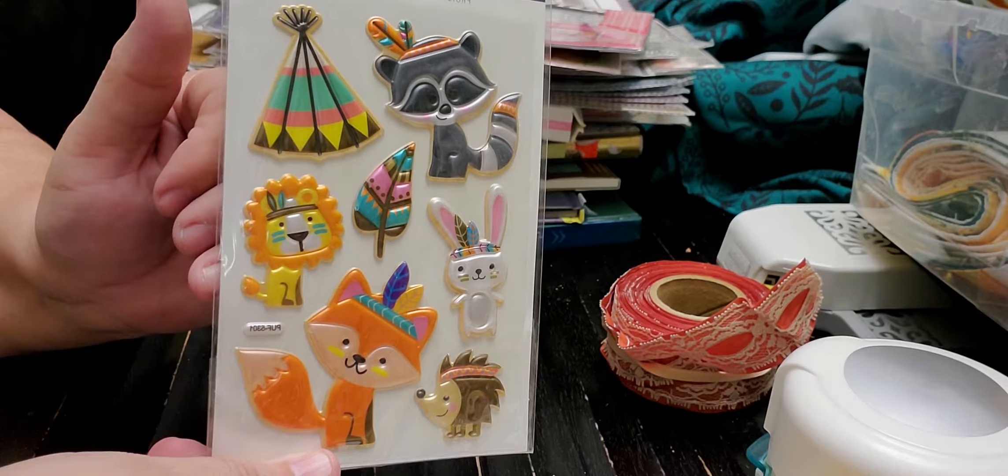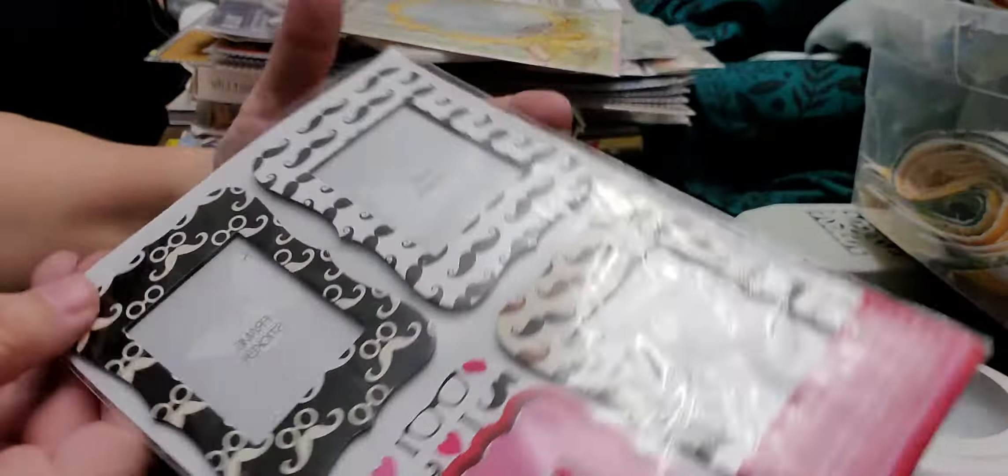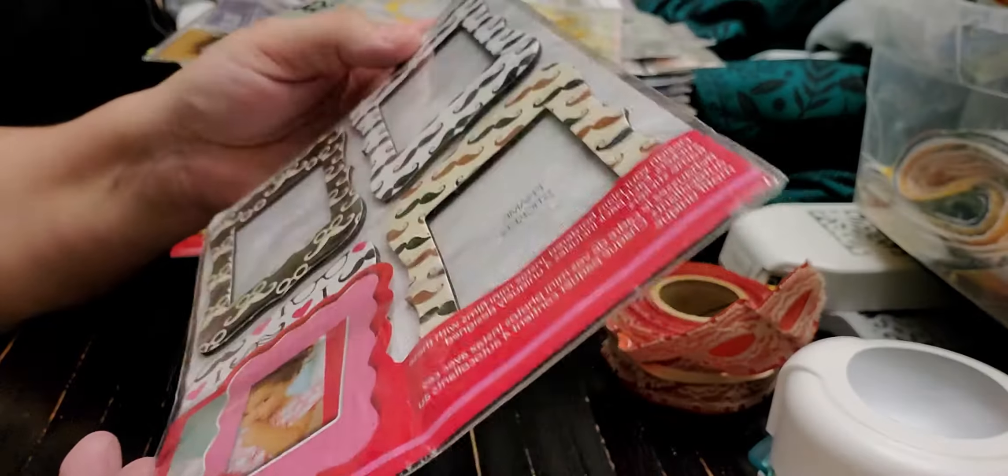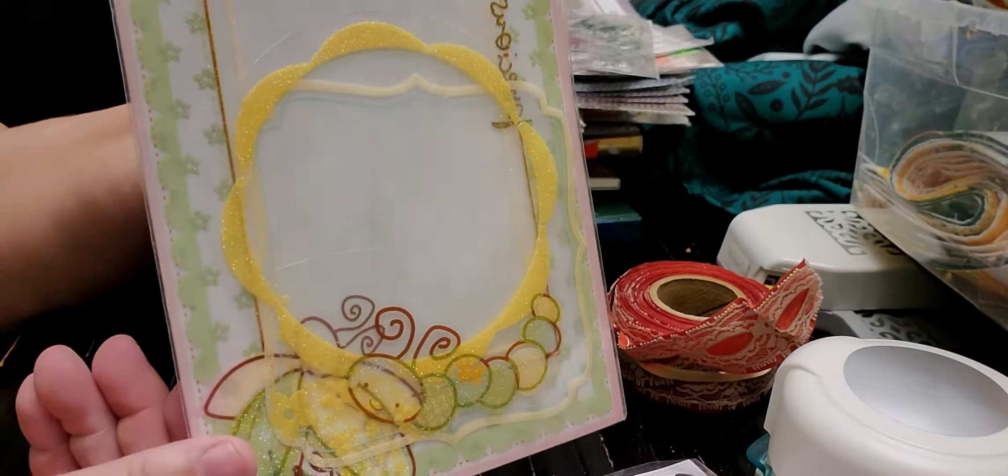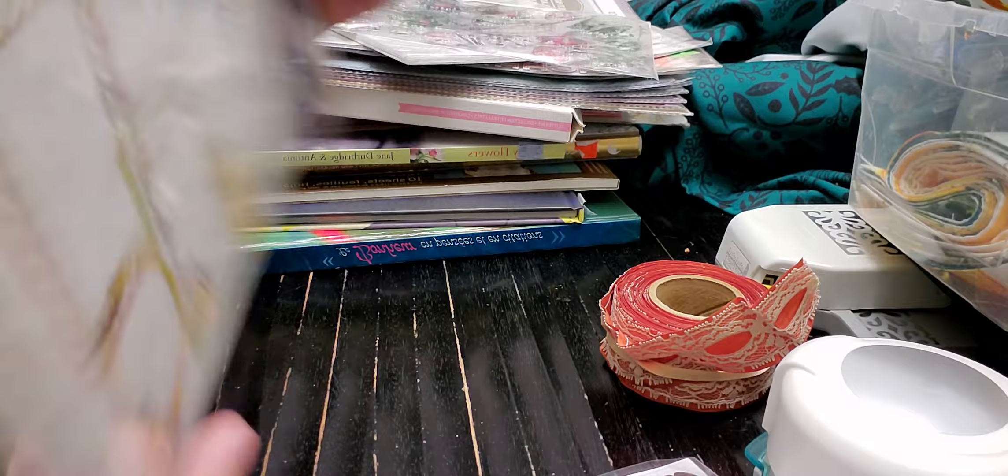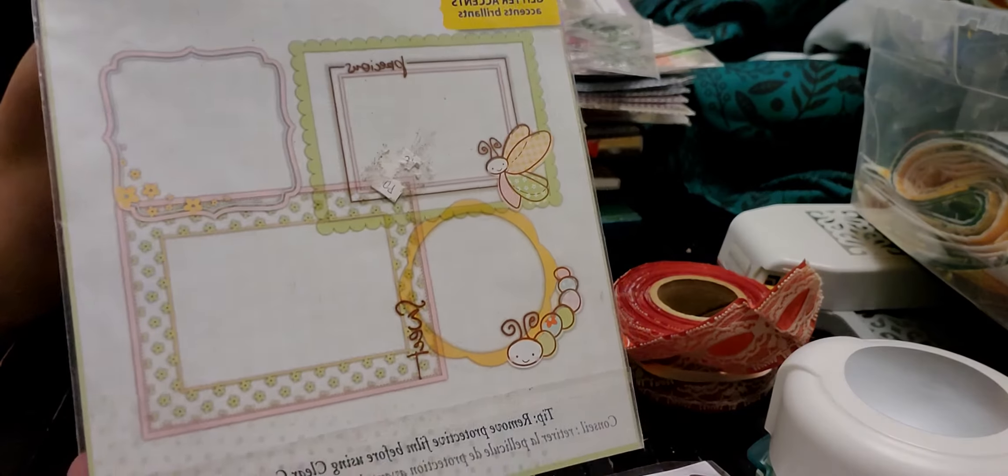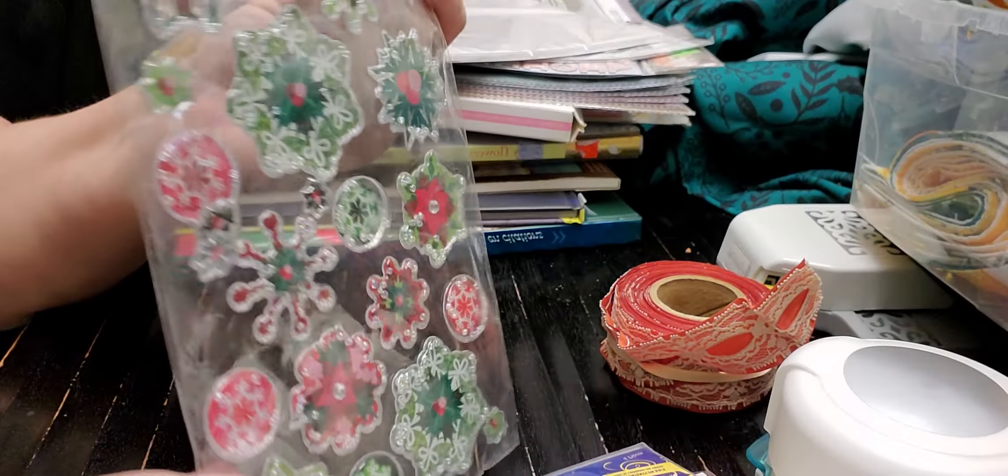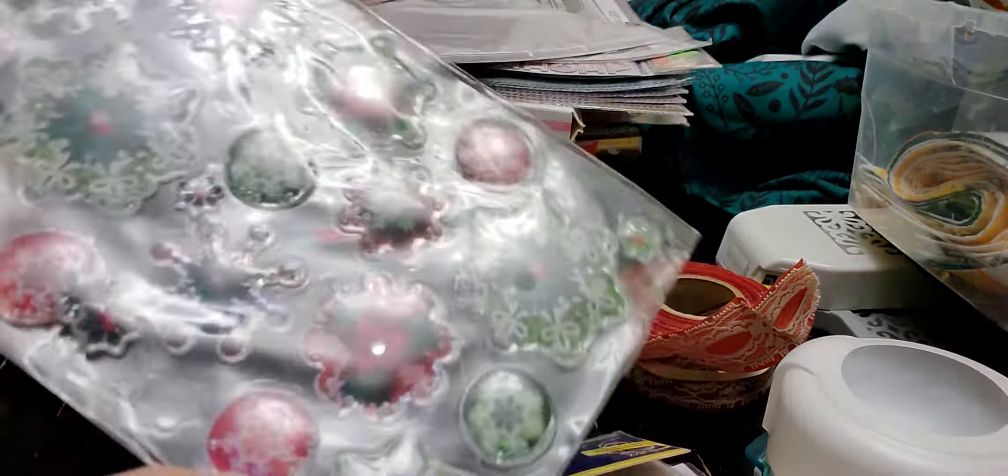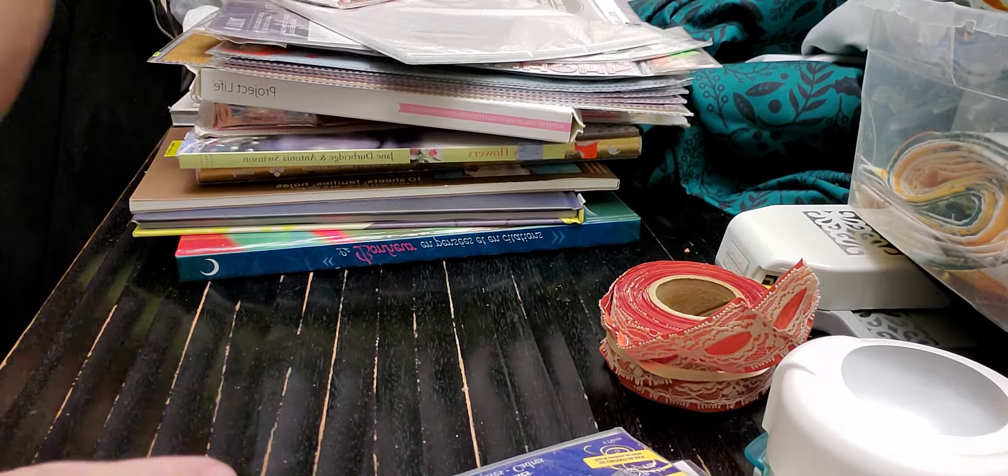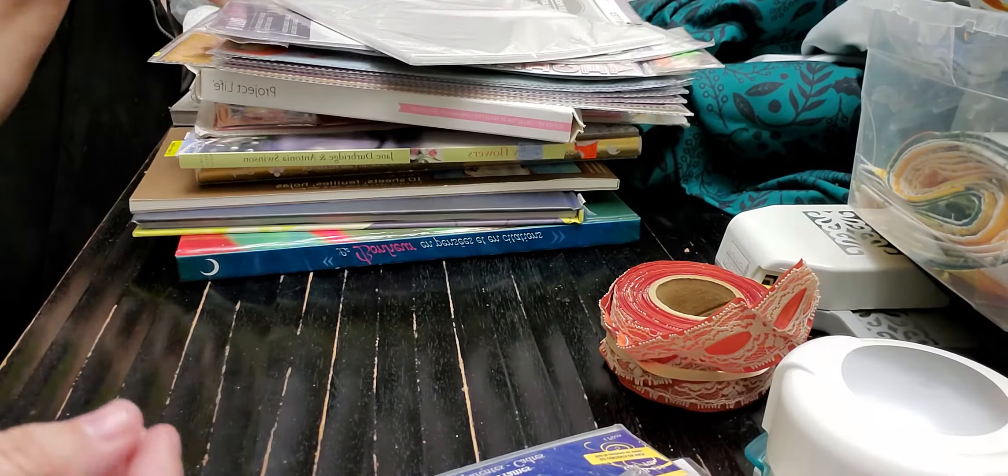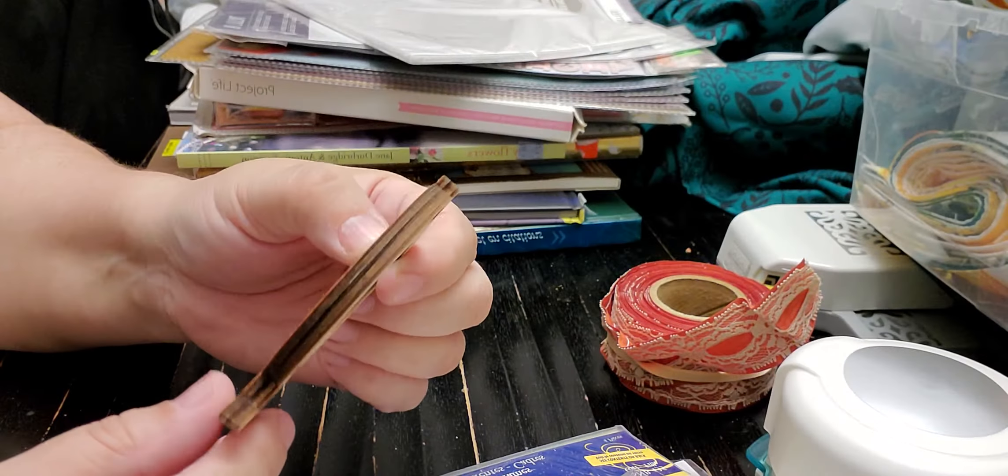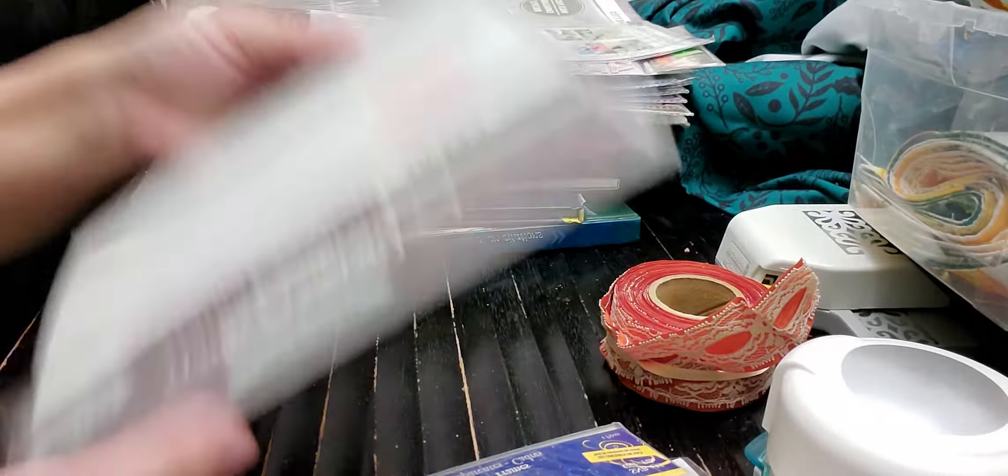She also had these frames, mustache frames. She also had some of these little yellow bicycle clear-cut frames. That's what they look like. I got some puffy stickers with Christmas, with beads inside, shakers. Some rick-rack, pink rick-rack. I got this little wooden globe.